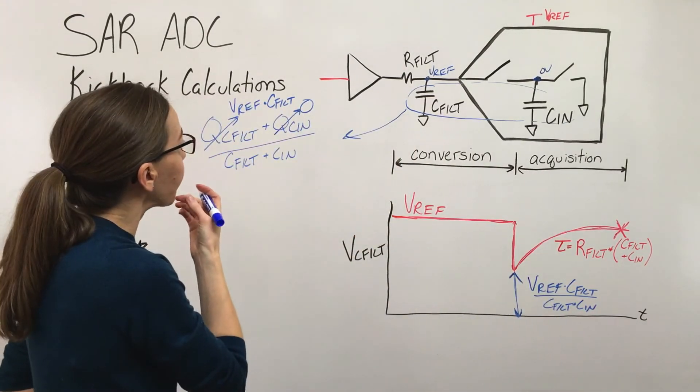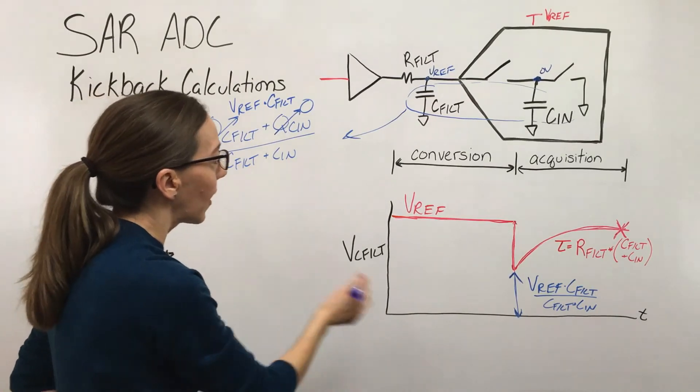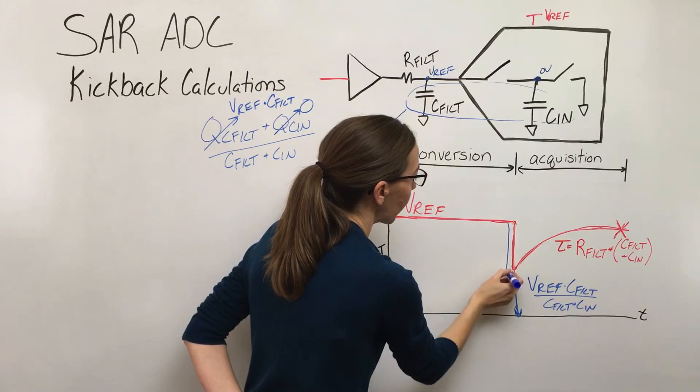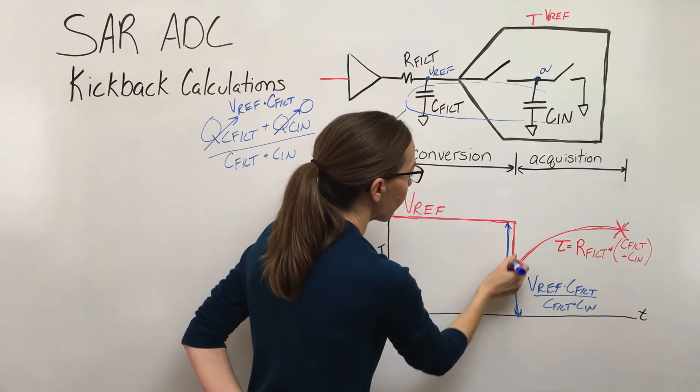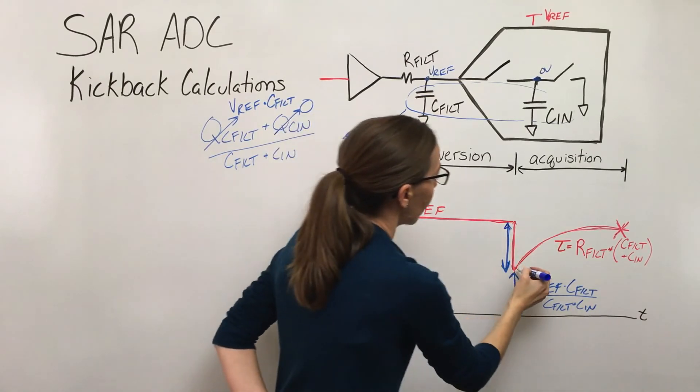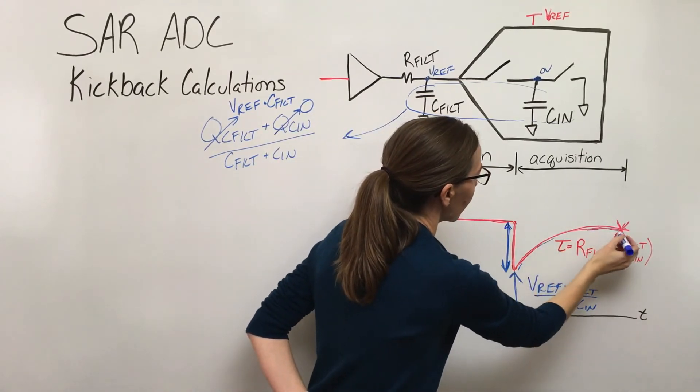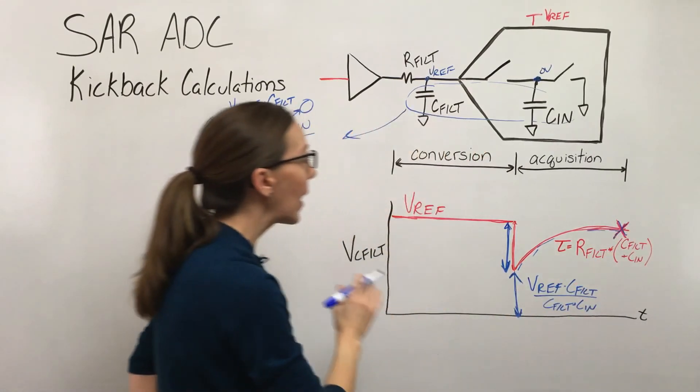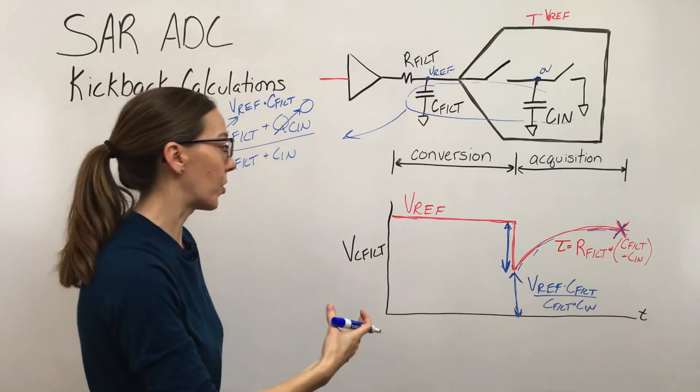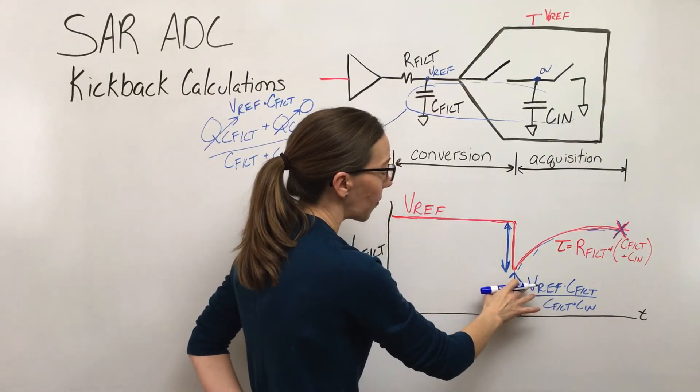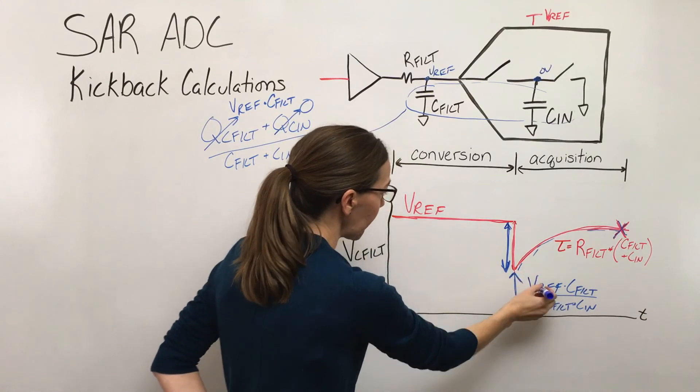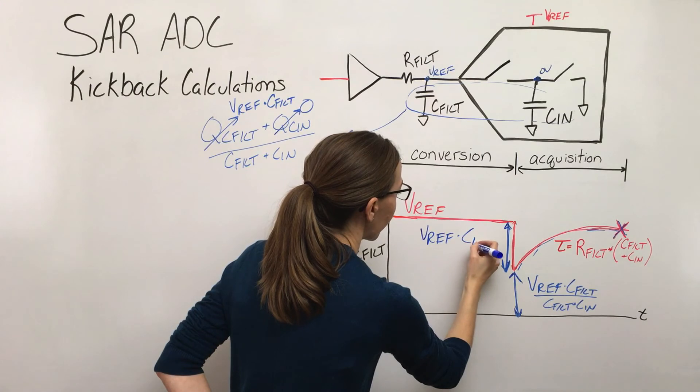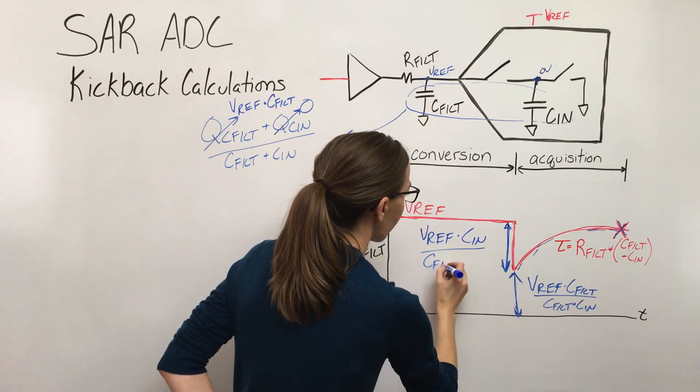This is good to know, but what we really need is we need to know this value. Because once we have this value and then we know what this curve looks like because of tau, and we also know what we want to settle to, that can help us build equations around how do we design this circuit. Just to hand wave a little bit for you to derive on your own, this just works out to v-ref times that sample cap over the total capacitance.